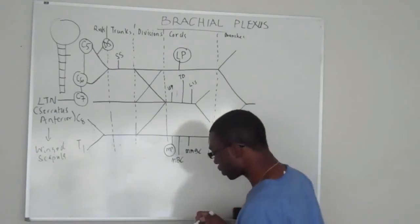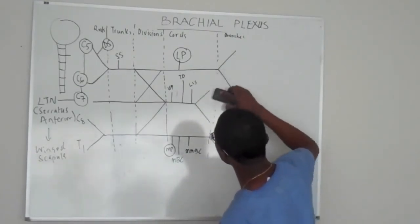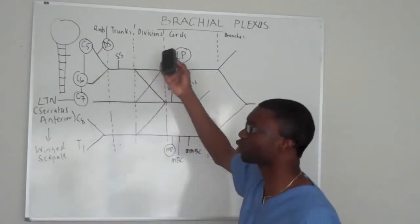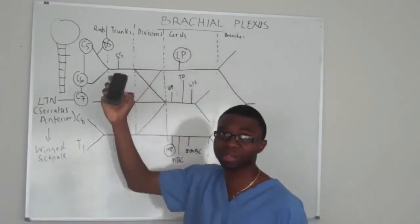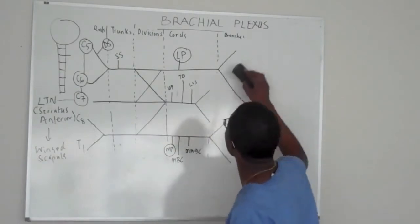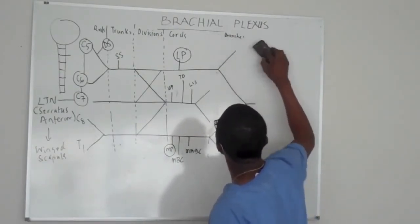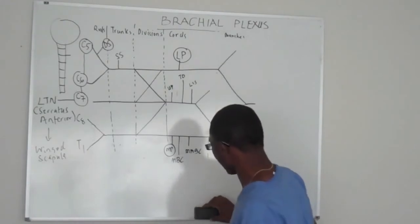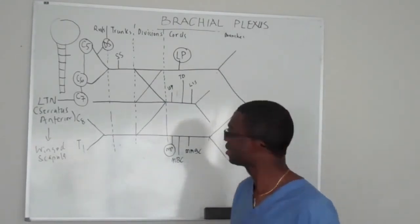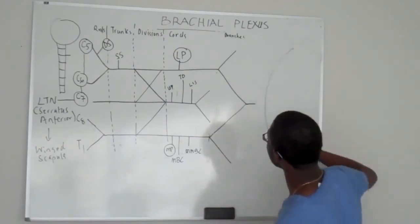Can you see we're almost there? Now let's get to the bread and butter. I'm going to erase this line because they're very annoying. The whole point was just showing you that mnemonic. Now let's go to the branches.